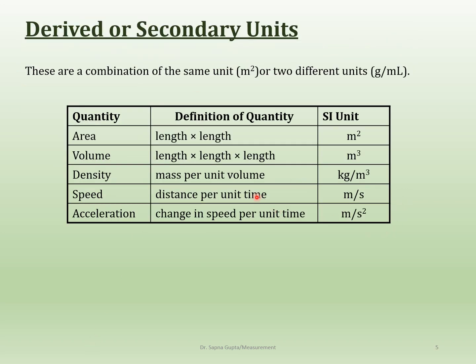Secondary units are just a term for when you combine two or more units — area, volume, density, and speed are all secondary units because you need two or more units to get the final unit. Your final unit often tells you what the formula is: for example, meter times meter gives you meter squared, which is length times length. You don't always have to memorize the formula — just look at the units.